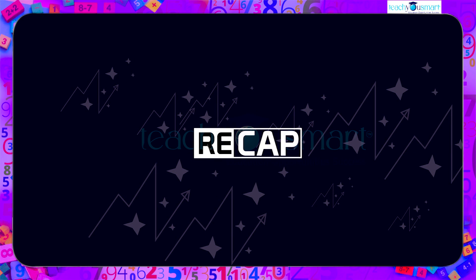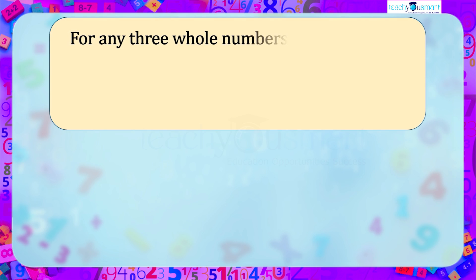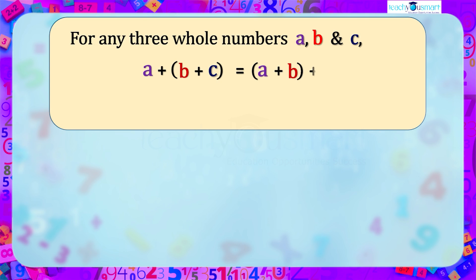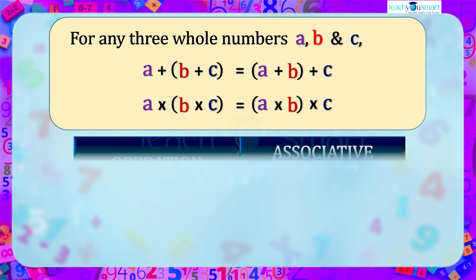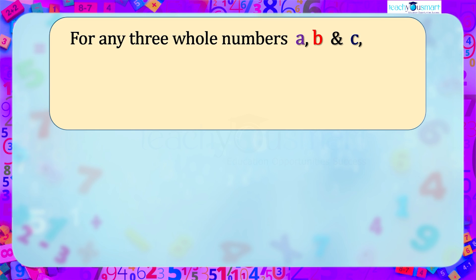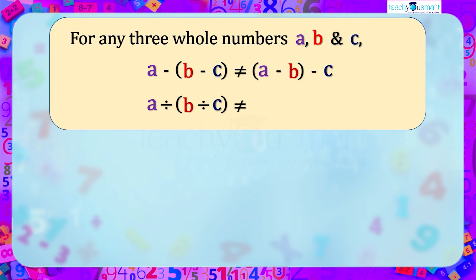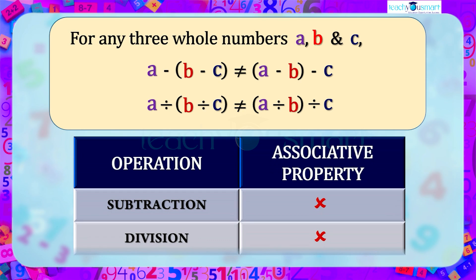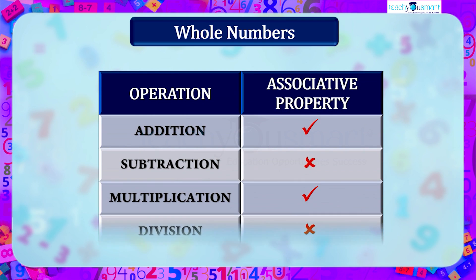Let's recall what we discussed today. For any three whole numbers A, B, and C: (A + B) + C = A + (B + C), and (A × B) × C = A × (B × C). While (A − B) − C is not equal to A − (B − C), and (A ÷ B) ÷ C is not equal to A ÷ (B ÷ C). Hence, for whole numbers, addition and multiplication are associative, while subtraction and division are not associative.